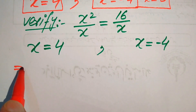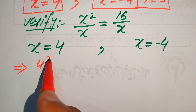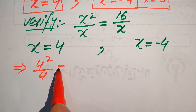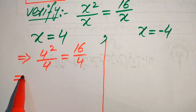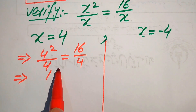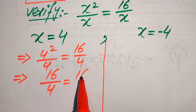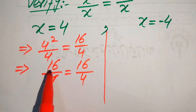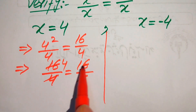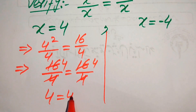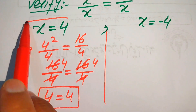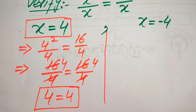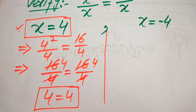Substituting x equals 4: we get 4 squared divided by 4 equals 16 divided by 4, which gives 16 over 4 equals 16 over 4, and both sides simplify to 4 equals 4. This confirms that x equals 4 satisfies the given equation, so it is a valid solution.